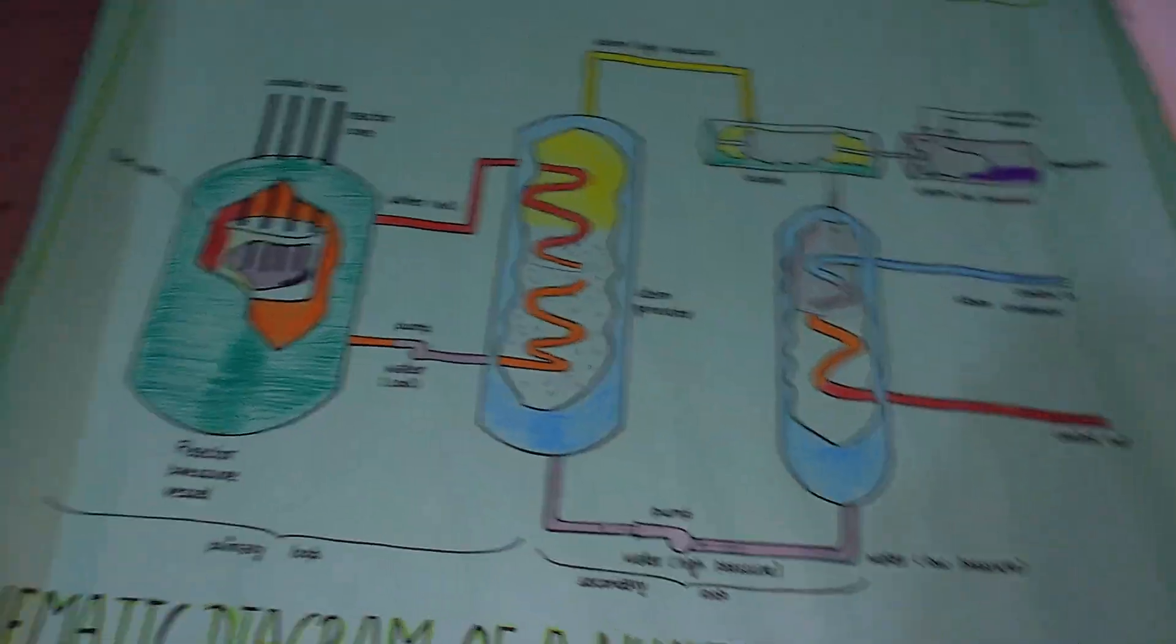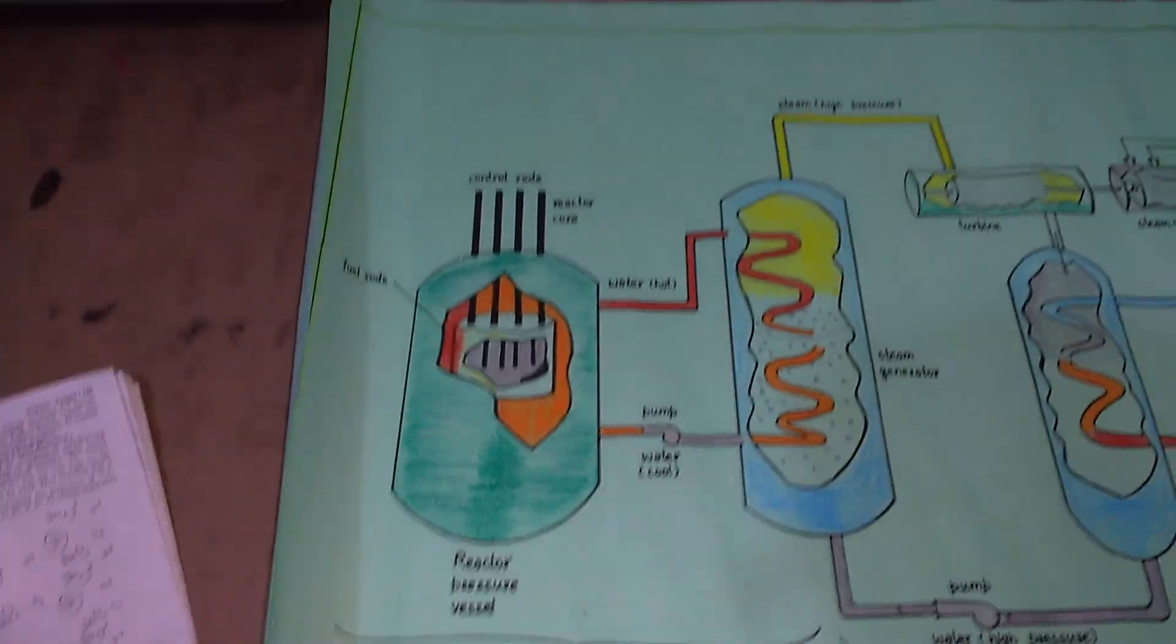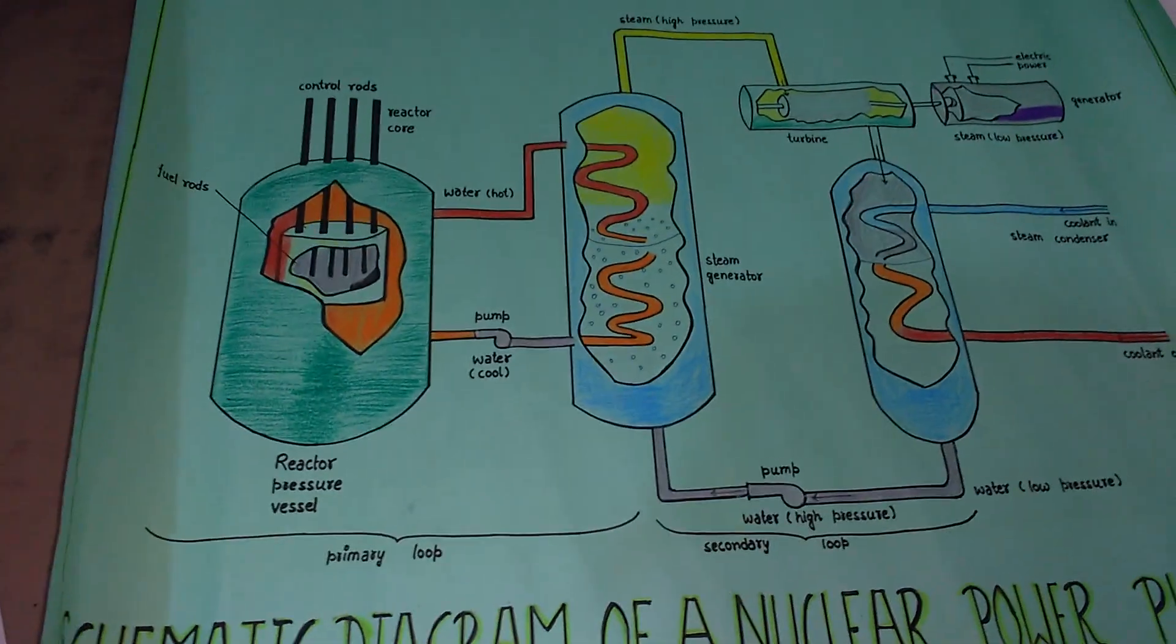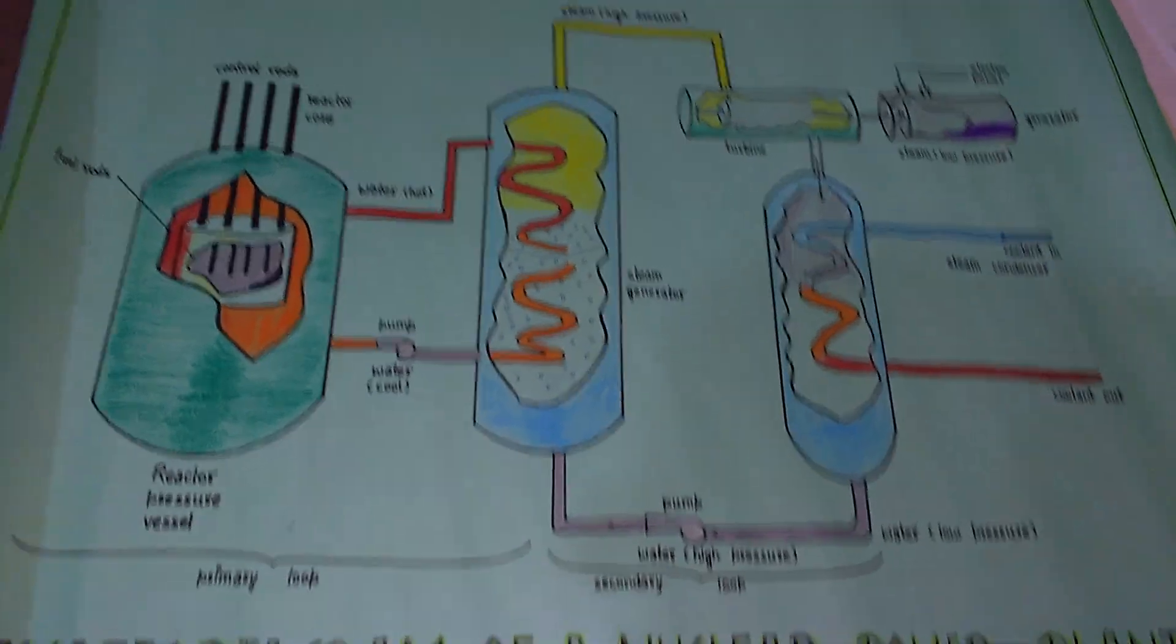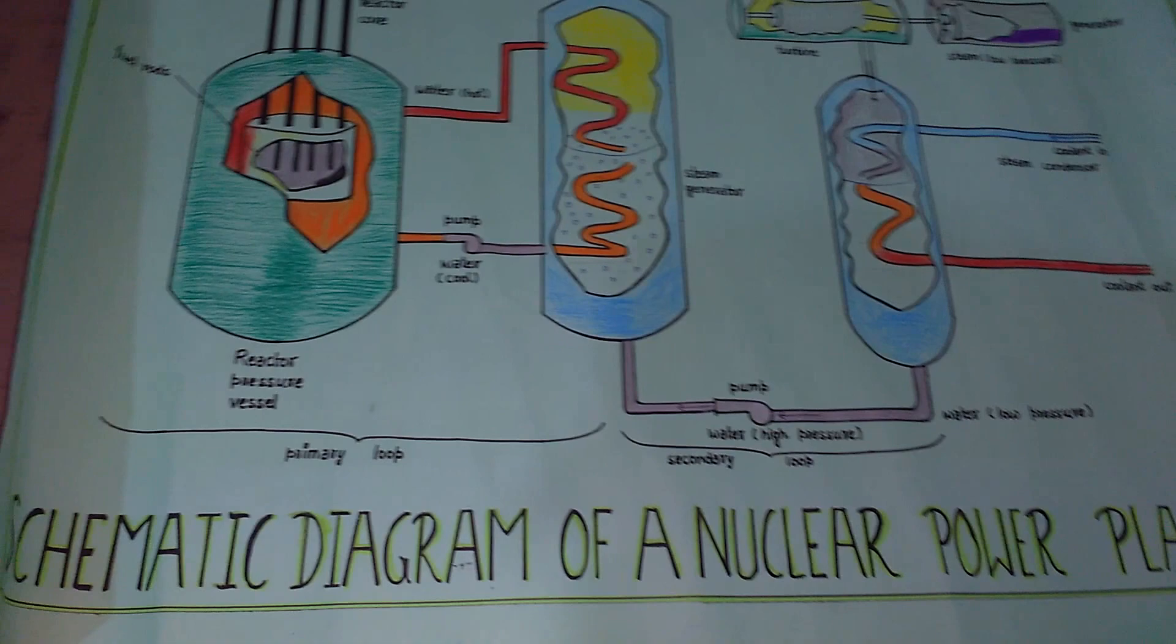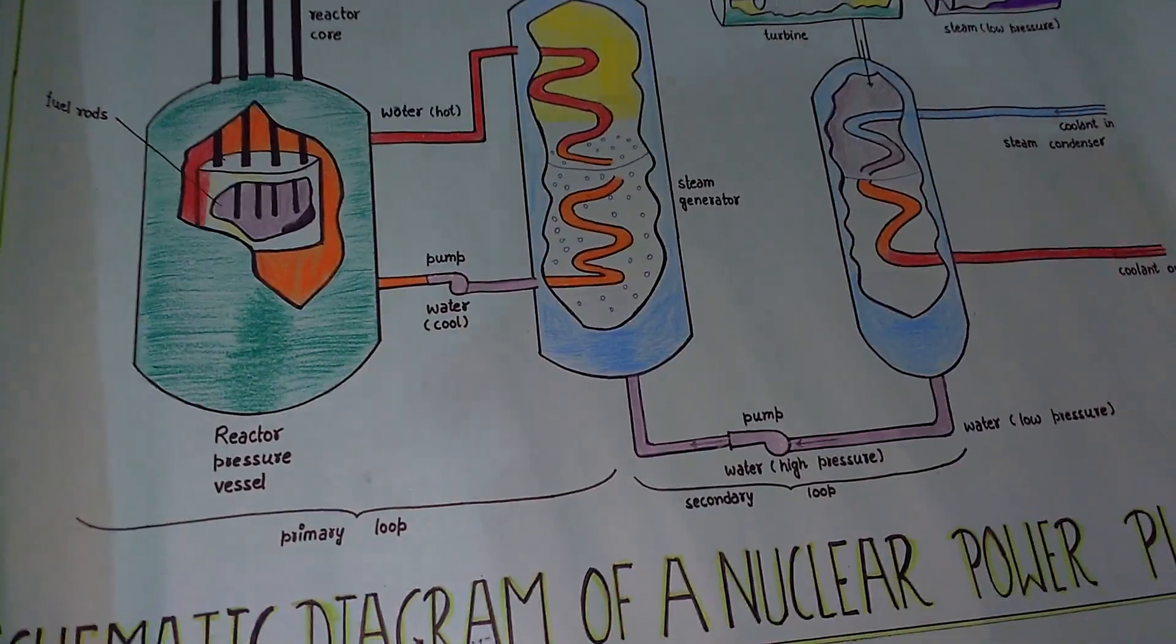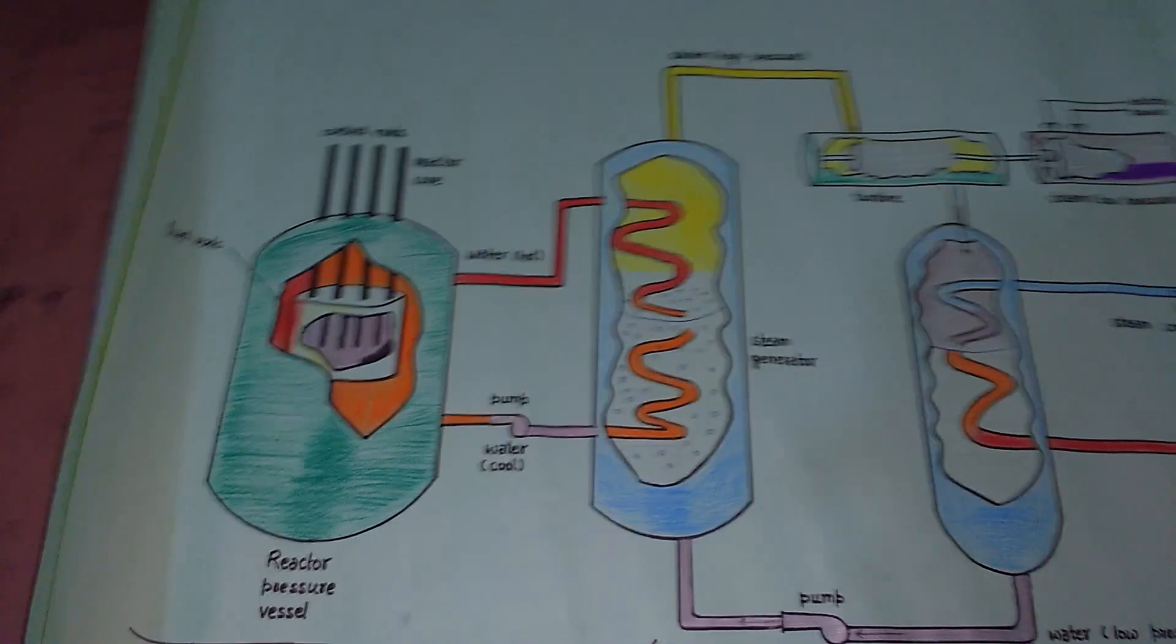So let's move further. This energy is used to generate steam which operates a turbine and turns an electrical generator. On average, each fission of a uranium-235 nucleus produces about 2.53 neutrons. So 40% of the neutrons are needed to sustain a chain reaction.